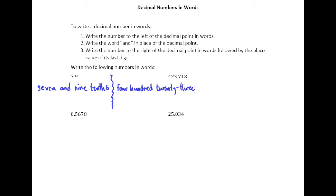Remembering those hyphens whenever you have a tens place followed by a ones place. So four hundred twenty-three 'and' using the word 'and' for the decimal point. Now we have to just say or write out 718. So let's do that, 718.